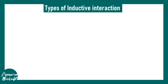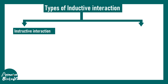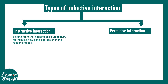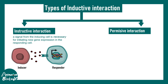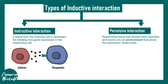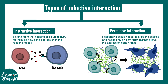There are two flavors of inductive interactions. In instructive interaction, a secreted signal provided by the inducer is received by the responder, leading to changes and a new cell fate. In permissive interaction, the molecular environment surrounding the cell — specifically the extracellular matrix — provides inductive and permissive signals to induce a particular fate, such as fibroblast differentiation.